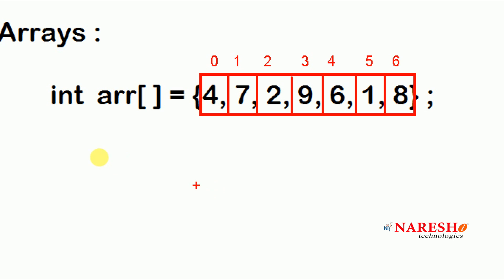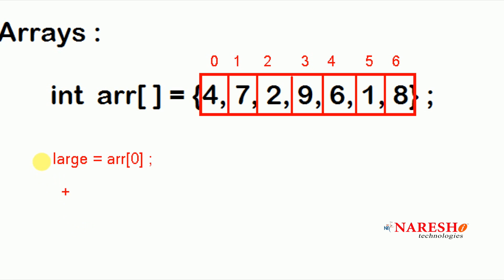We do not know the largest element yet, so first take one variable — name it `large`, type integer — and store the first element of the array. The first element is ARR[0], which is 4, so initially the largest number is 4.